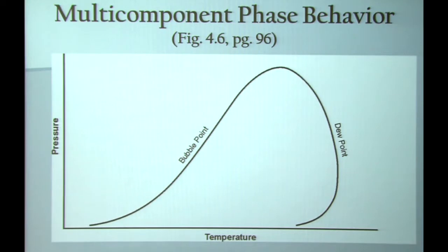We're going to talk about phase envelopes. On the diagram, you see a plot of pressure versus temperature. And what we show is a bubble point curve and a dew point curve. The two curves come together at the critical point. The critical point is that point where the properties of the liquid and the vapor are the same.